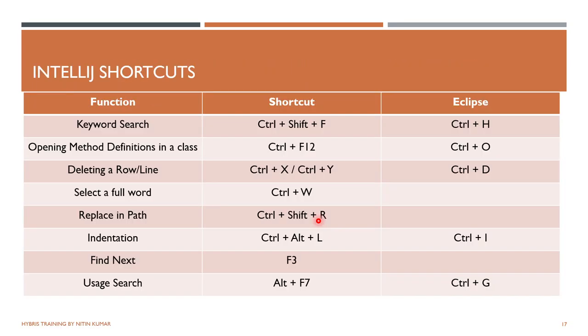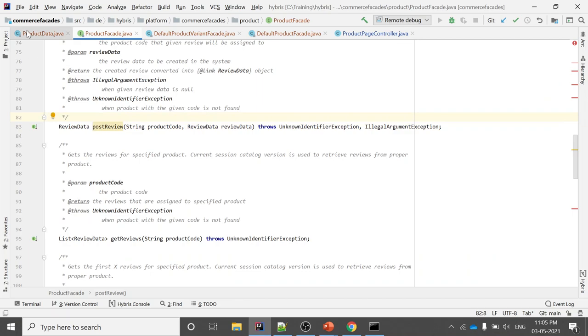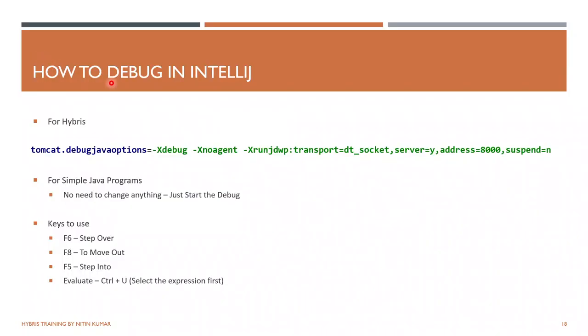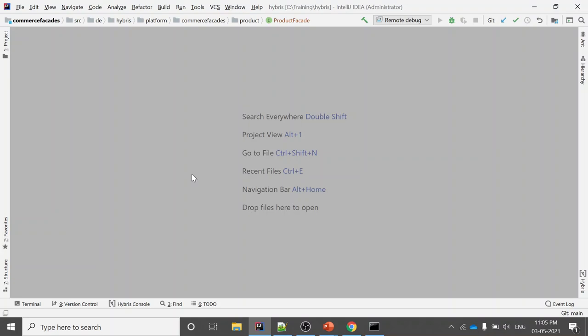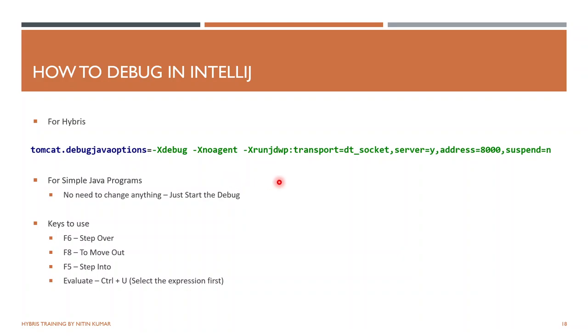These shortcuts will be enough to start with your IntelliJ projects and as you move forward you will become more comfortable. Now for debugging — if you want to debug your Hybris project, start your server in debug mode by running the command: hybridserver.bat debug (dot bat space debug). This command starts the Hybris server in debug mode.